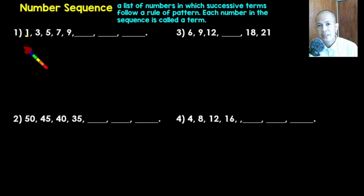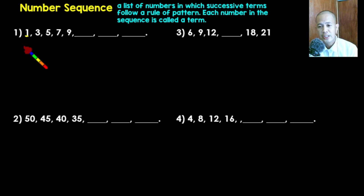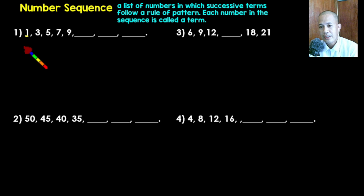Good day everyone, welcome again to our math classroom. In today's lesson we're going to study number sequences — formulating the rules for finding the next term in a sequence. A sequence is a list of numbers in which successive terms follow a rule or pattern. For example, counting one, two, three, four, five, six — you are following the rule of adding one to the next number. Each number in the sequence is called a term.